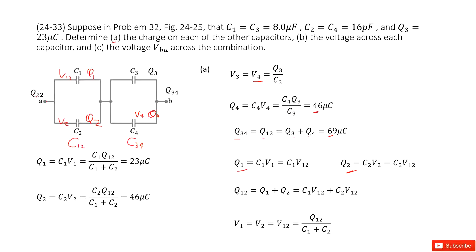We know Q12 should equal Q1 plus Q2. Substituting Q1 and Q2, we get an equation for V12, which we solve. Then, using the known V12 equal to V1 equal to V2, we compute Q1 = C1 times V1 and Q2 = C2 times V2, inputting all given quantities to get the final answers. This gives us the charge on each capacitor.